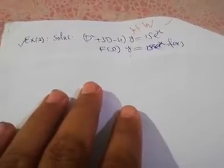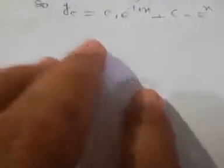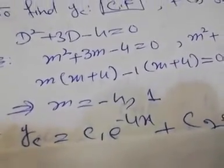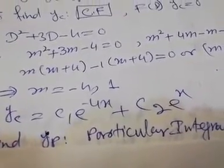Now discussing the failure case: when f(D) becomes zero after substitution. Example: (D² + 3D - 4)y equals 15·e^x. Solving the auxiliary equation gives roots m = -4 and m = 1. So the complementary function is c1·e^(-4x) plus c2·e^x.